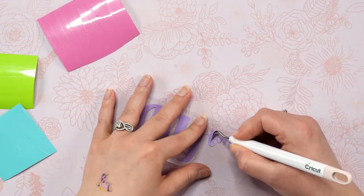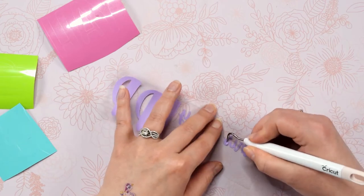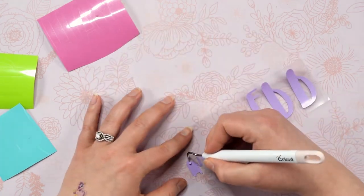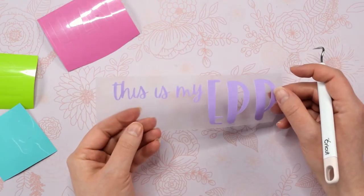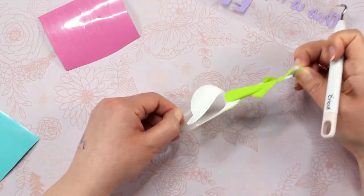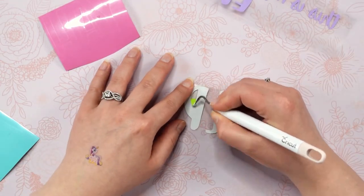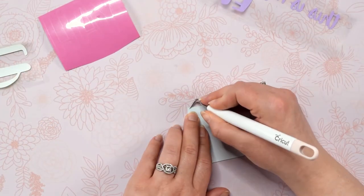After I get the bulk of the excess vinyl off of the design, I go back and get all the smaller pieces in the letters and the rest of the design. Make sure you look over your design a few times to make sure there aren't any little pieces you missed when weeding. I can tell you from experience it is very frustrating to finish a project and realize you missed something when you were weeding and then it's too late to fix it.